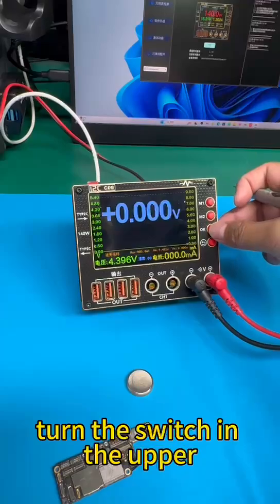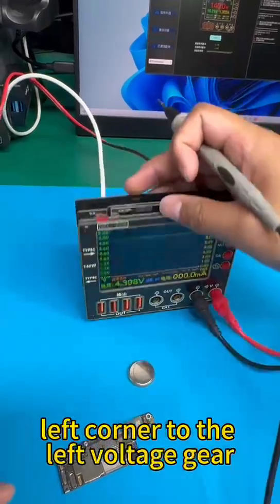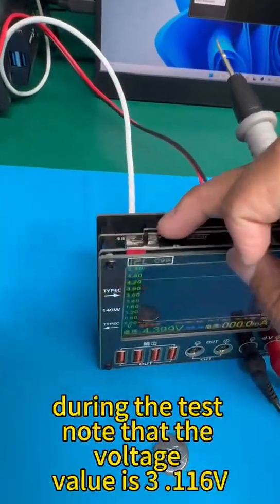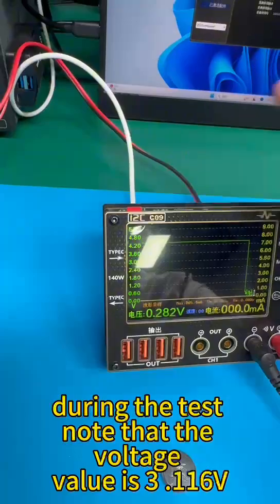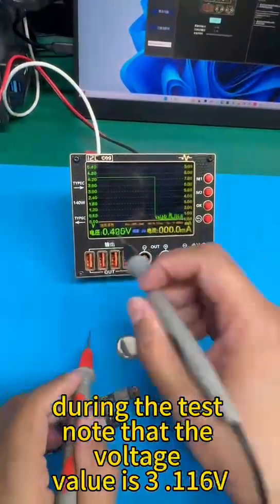Second method. Turn the switch in the upper left corner to the left voltage gear during the test. Note that the voltage value is 3116V.